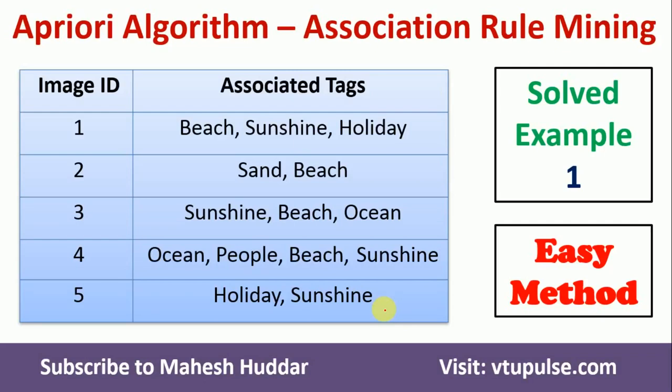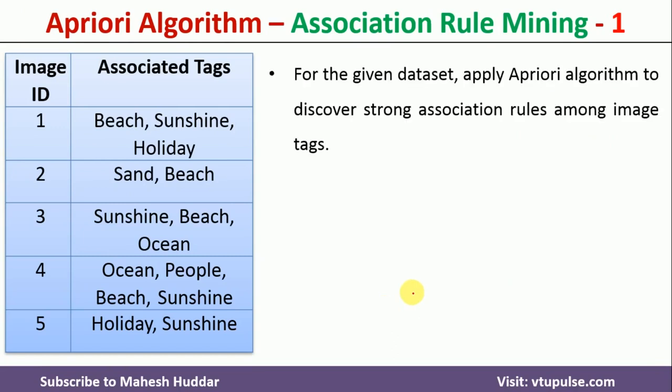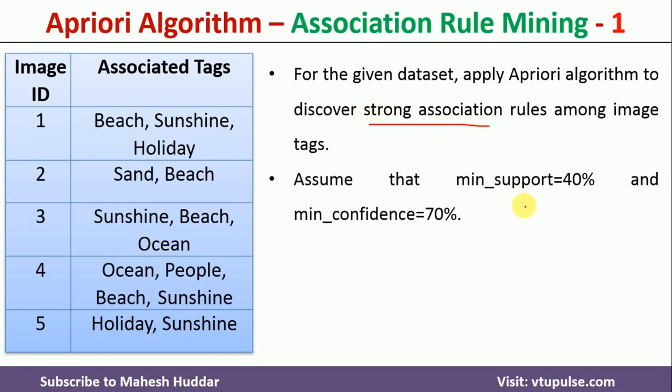Hi, welcome back. In this video, I will discuss the Apriori algorithm to generate strong association rules for the given dataset. This is solved example number 1. The link for other examples is given in the description below. This is the dataset given to us which has 5 instances with 5 image IDs and associated tags. We need to apply the Apriori algorithm to discover strong association rules given a minimum support of 40% and minimum confidence of 70%.